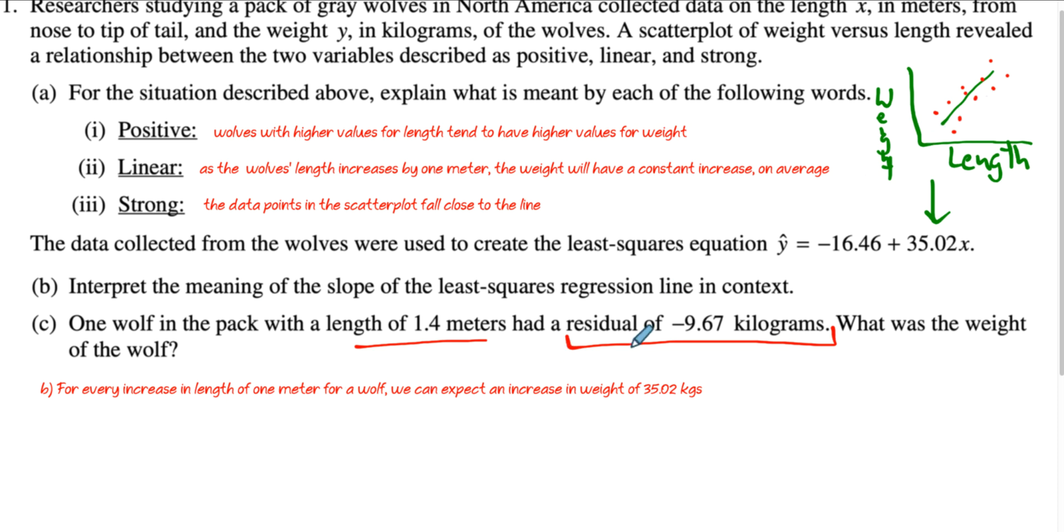So the first thing we have to do is find the predicted weight. So the predicted weight, all right, let's do this everybody. Wait, just kidding. Predicted weight equals negative 16.46 for a 1.4 meter wolf. We just have to plug it in this equation here.